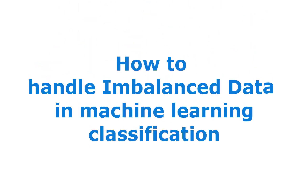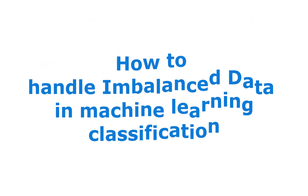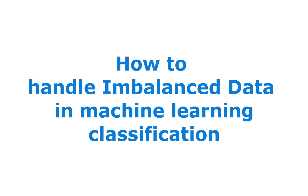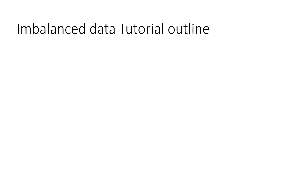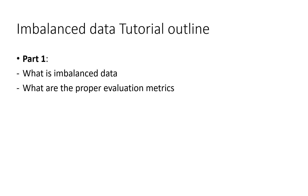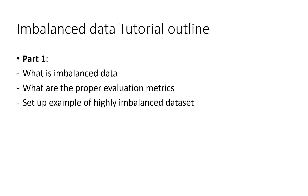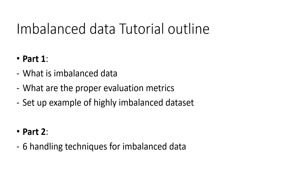In this tutorial, I'll show you how to handle imbalanced data in machine learning classification problems with an example in Python. Due to the complexity of this topic, this tutorial will have two videos. In part 1, you'll learn what is imbalanced data, what are the proper evaluation metrics for it, and set up our example of a highly imbalanced dataset ready for modeling. In part 2, you'll learn and apply six popular techniques to deal with imbalanced data, including oversampling, undersampling, and so on. By the end, you'll be able to make better prediction models with your imbalanced dataset.